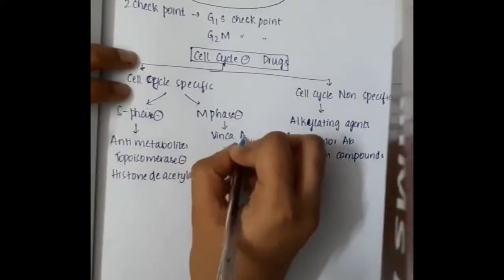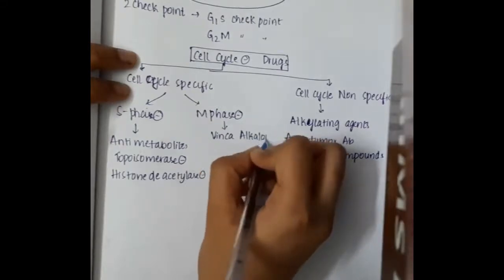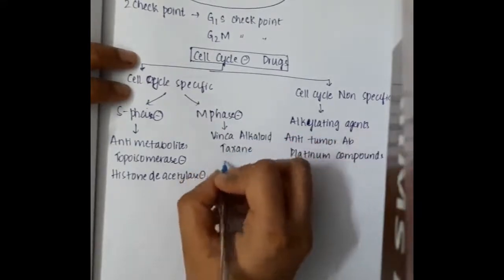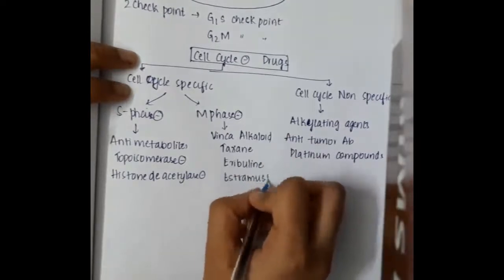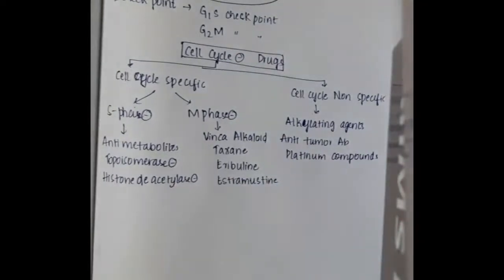Then we have M phase inhibitors. M phase inhibitors include vinca alkaloids, taxanes, eribulin, and estramustine.